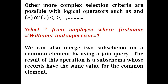More complex selection criteria are possible with logical operators such as AND, OR, NOT, less than, or greater than or equal to. For example: SELECT * FROM employee WHERE first_name = 'Williams' AND supervisor = 1. It checks both conditions and retrieves data satisfying them. We can also merge two sub-schemas on a common element using a join query. The result of this operation is a sub-schema whose records have the same value for the common element.